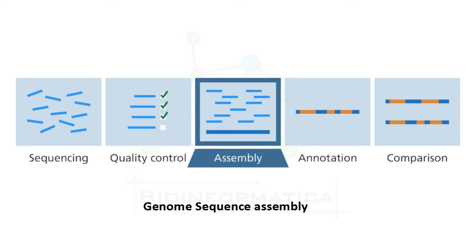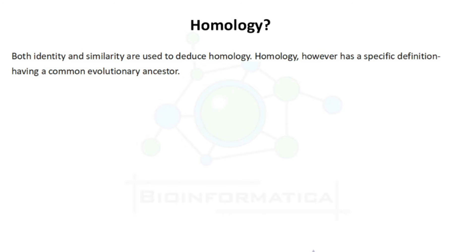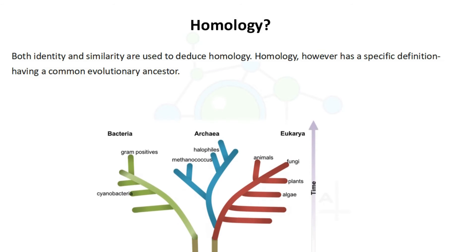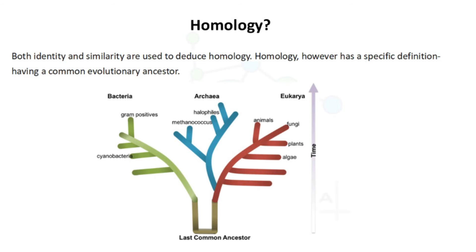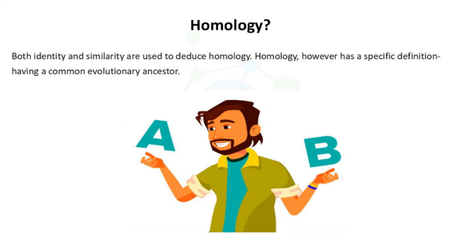One of the main applications of sequence alignment is the identification of homologous genes. Both sequence identity and similarity are used to deduce homology. Homology has a specific definition: having a common evolutionary ancestor. Therefore, sequences are either homologous or not — homology is a qualitative description of the relationship and should never be expressed as a percentage. Homology can be defined as the study of similarities between organisms to determine common ancestors based on genes, physiology, or development.